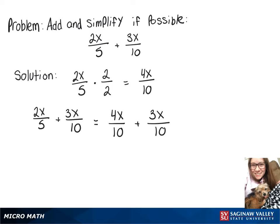And since those have the same denominator, we can just write that as one fraction, 4x plus 3x over 10, which simplifies to 7x over 10.